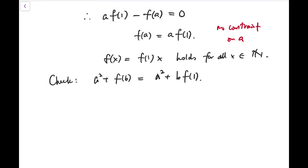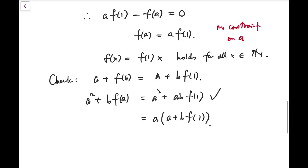a square plus f of b is a square plus b f of 1. And sorry, a plus f of b should be the divisor. Now, and the dividend is then a square plus b times f of a is a square plus a b f of 1. And this is a times the divisor. So yes, that's true. And yay, we are done.